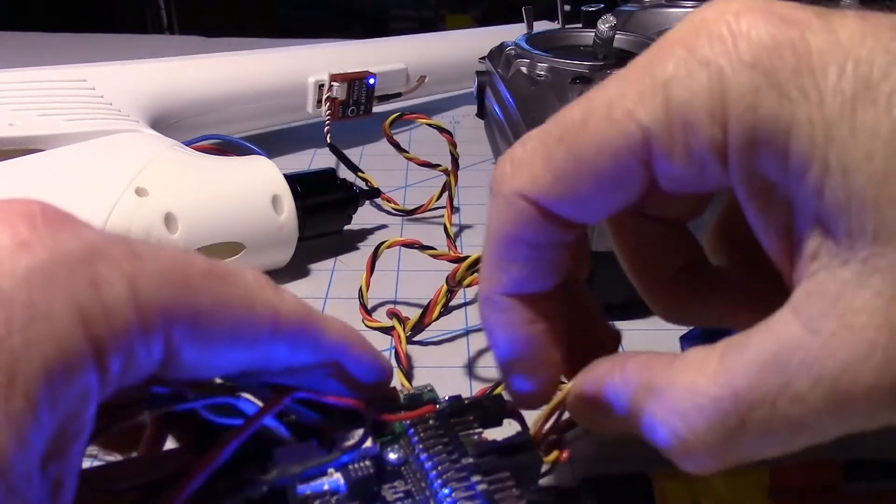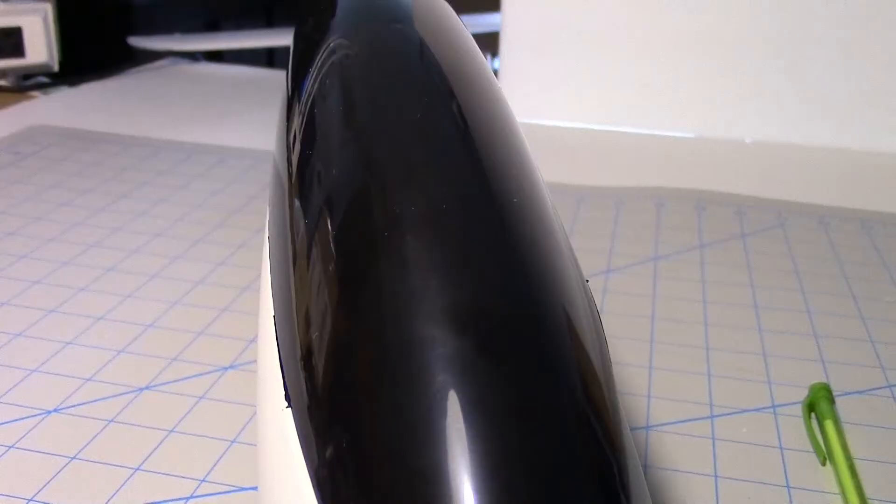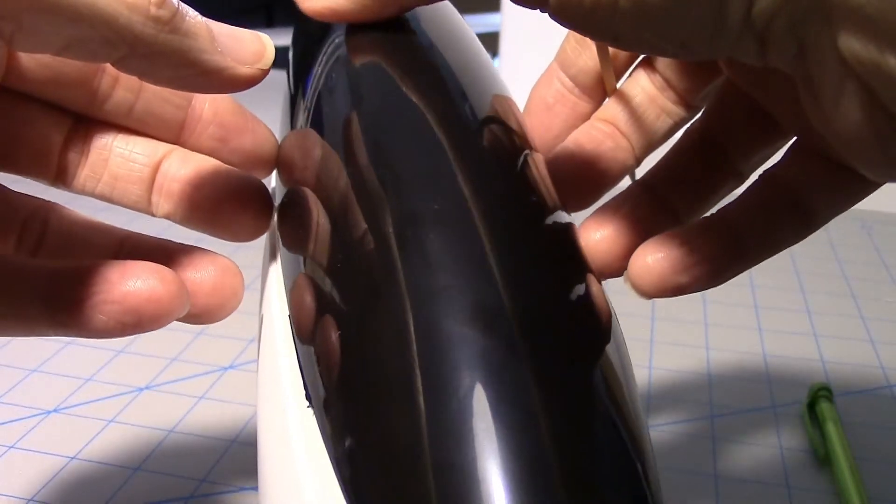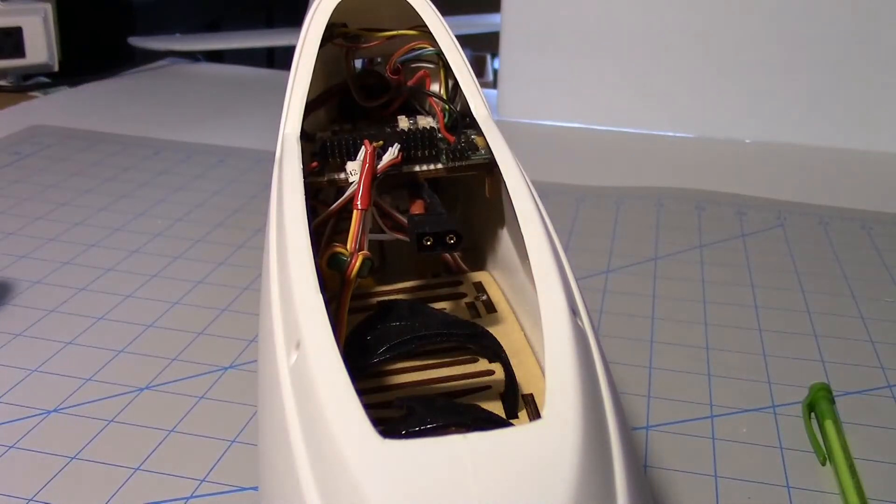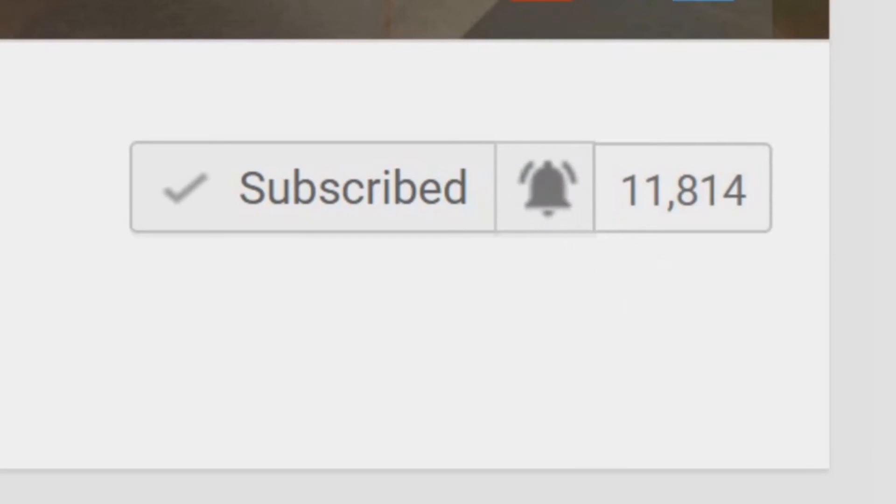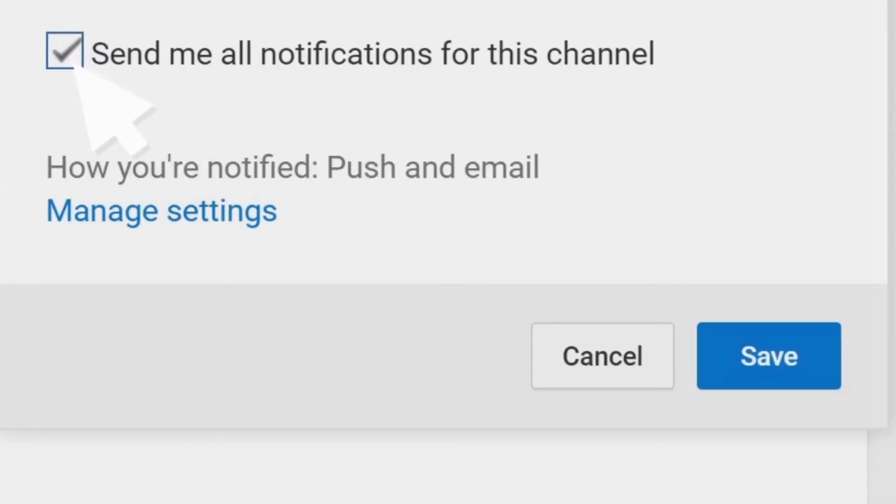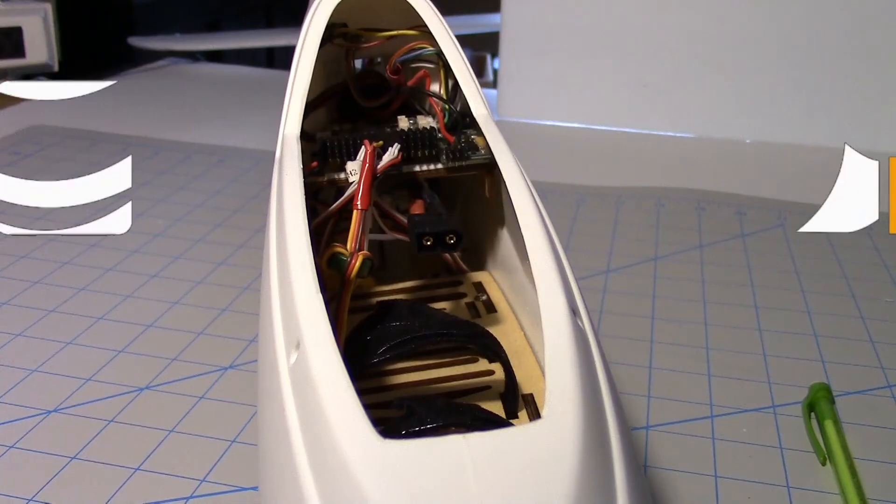So all the channels look like they're operating. So in the next video in this series, I'll show you how to mount the components, including the flight controller, onto the wooden tray inside the Volantix Ranger 2000. So stay tuned for that. And don't forget to like and subscribe. And hit that notify checkbox. Thanks for watching.